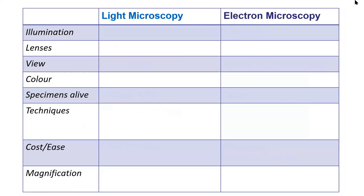I started making a comparison table to compare aspects of light microscopy and electron microscopy. For the first column — light microscopy — we're using light, which can be sunlight, a light bulb, or a laser: either UV or visible light. I'm going to use this as a review for light microscopy for now and come back to fill in the electron microscopy part.